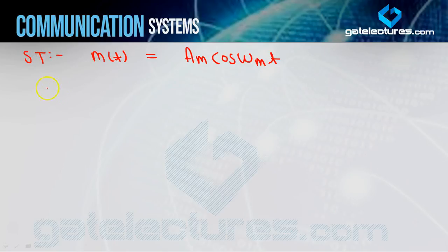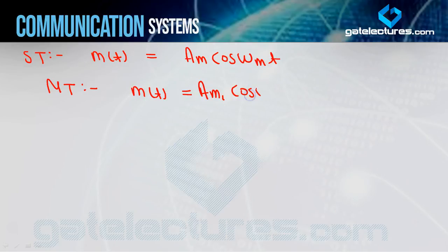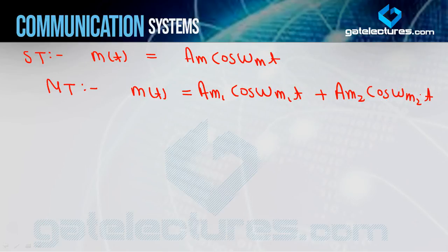Single tone में हम लोगों ने study किया हुआ है कि if message signal m(t) contains only one frequency component, then it is called single-tone modulation. Multi-tone modulation में, if message signal m(t) contains more than one frequency component — यहाँ पर example ले रहा हूँ कि message signal m(t) two frequency components contain कर रहा है: ωm1 and ωm2, fm1 and fm2.